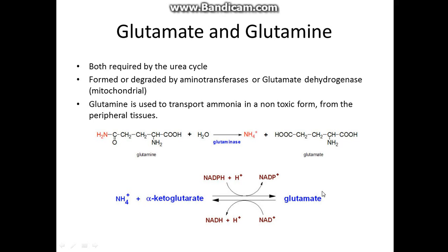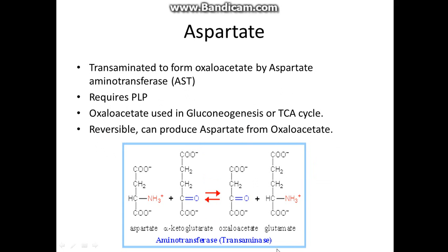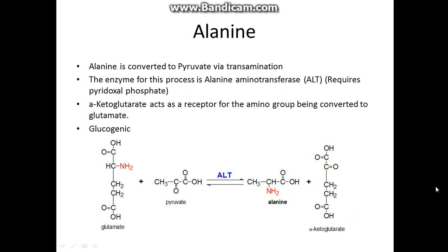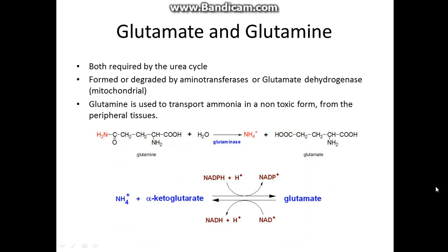Glutamate and glutamine form pretty much the core of nitrogen transport around the body. Both are required by the urea cycle and are formed using mostly aminotransferases, as seen earlier — essentially every single one seems to require glutamate, alpha-ketoglutarate, and glutamine. They are used to transport ammonia in a non-toxic form, because ammonia is actually toxic — it's a neurotoxin — and transports it from the peripheral tissues.